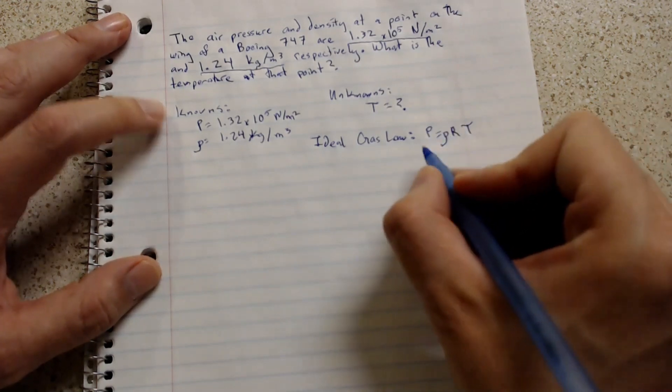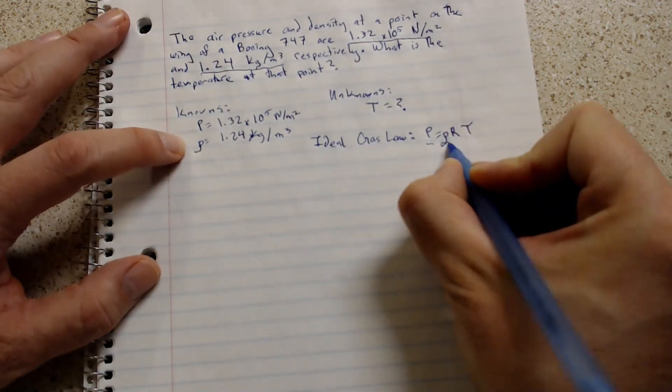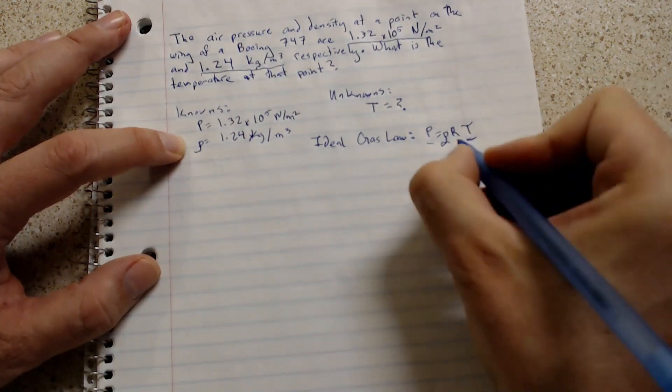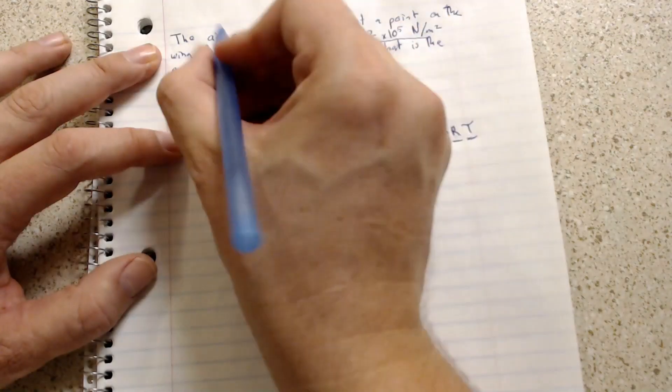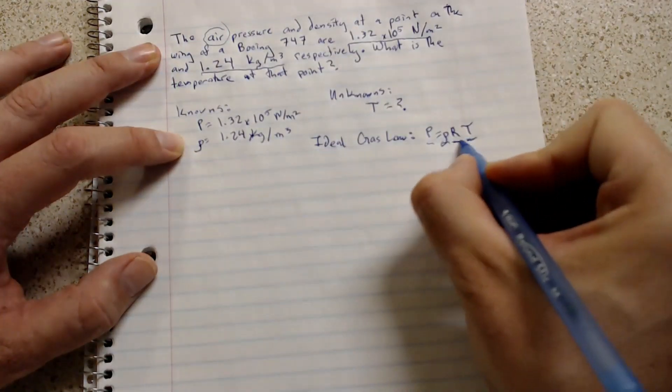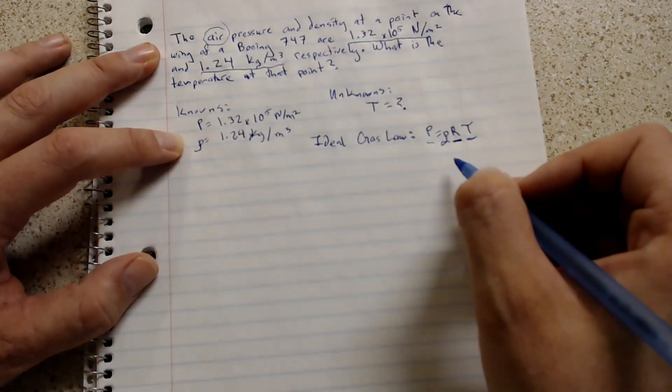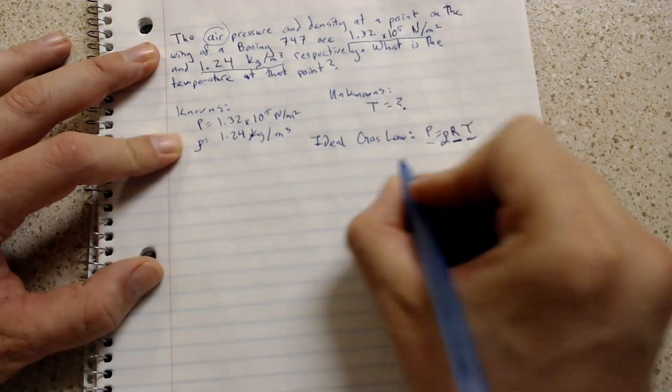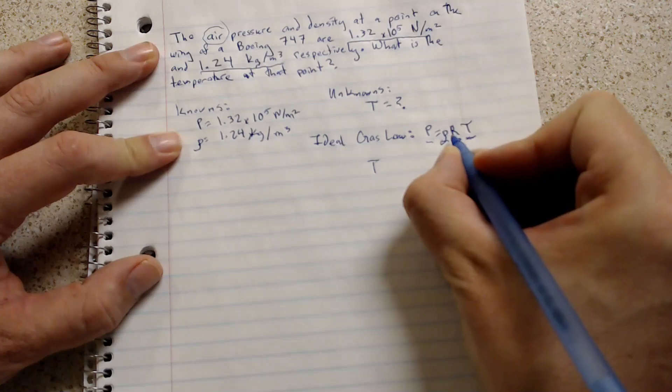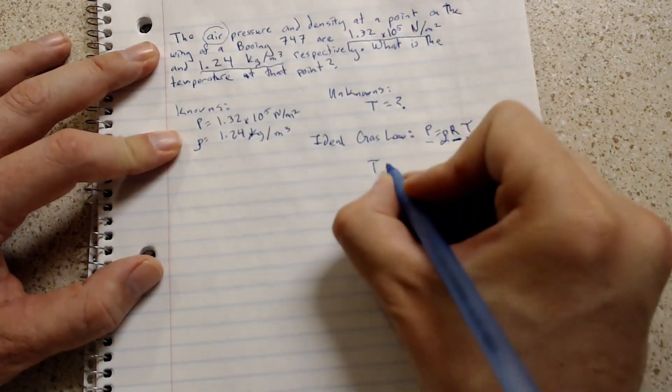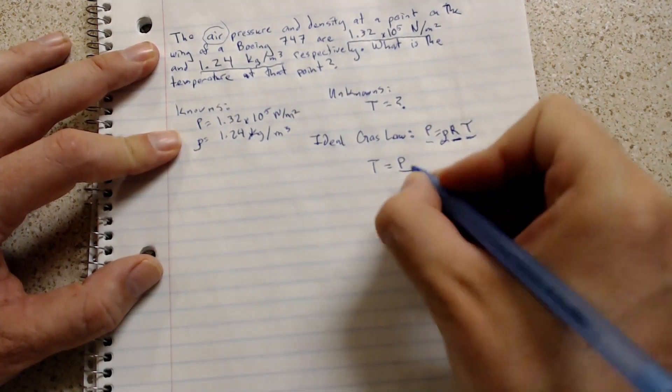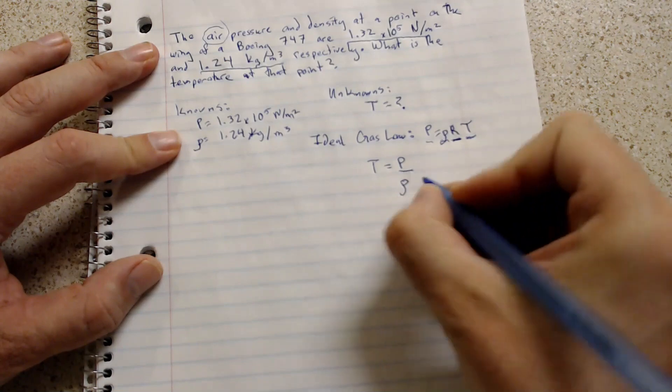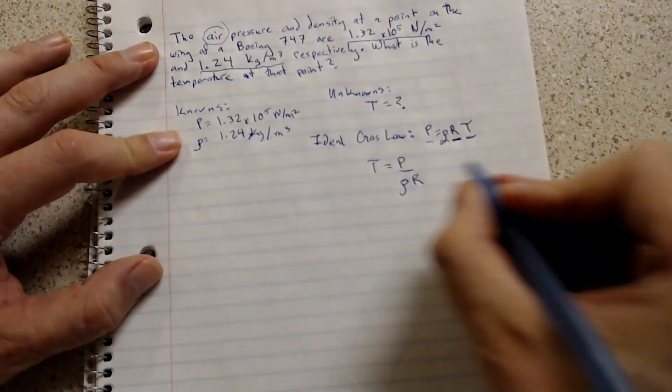If we look at this equation we have pressure, we have density, we're looking for temperature, and we know the gas constant for air. Our question says air up here, so we know the gas constant of air. What we can do is rearrange this problem to solve for temperature. Just doing some algebra. If I want temperature on one side I have to move density and the gas constant to the other side. So that gives me the equation that the temperature is equal to the pressure divided by the density multiplied by the gas constant.